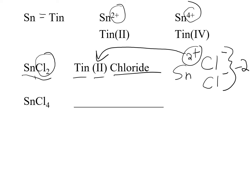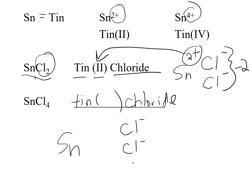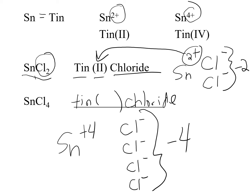For SnCl₄: Sn is tin — we'll have parentheses with the Roman numeral, and chlorine becomes chloride. We have 1 tin and 4 chlorides; each chloride is negative 1, so the overall anion charge is negative 4. To balance, tin must be plus 4 — so we put Roman numeral 4. The name is tin(IV) chloride.